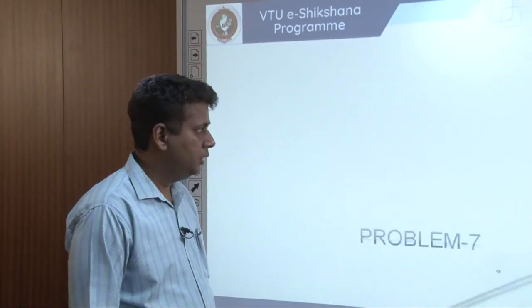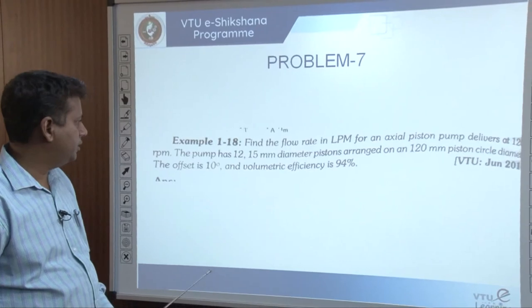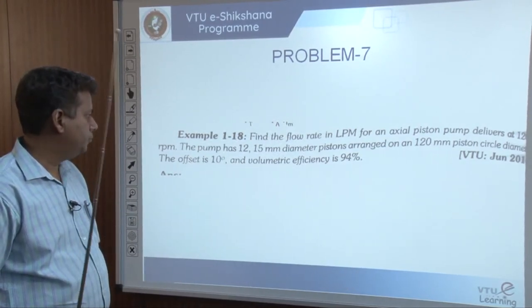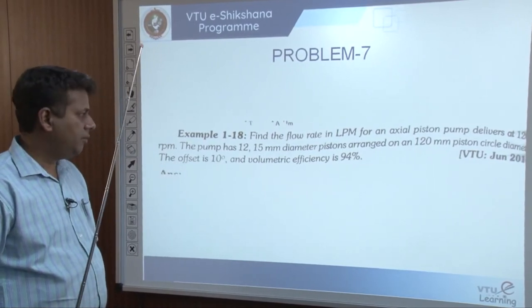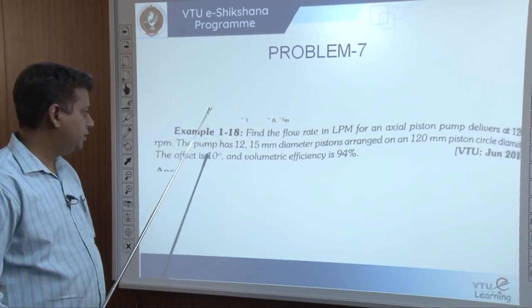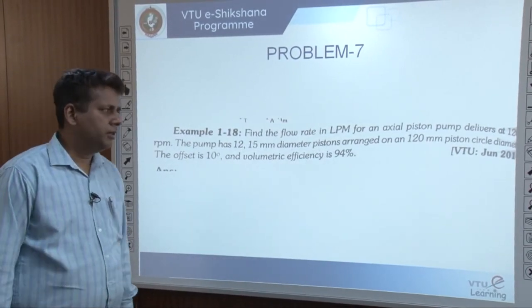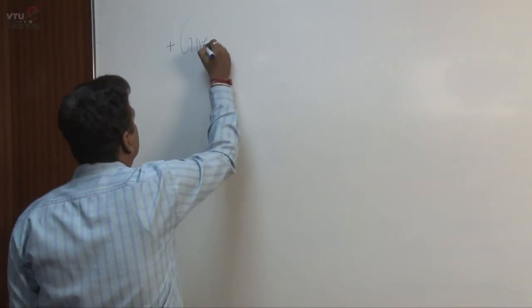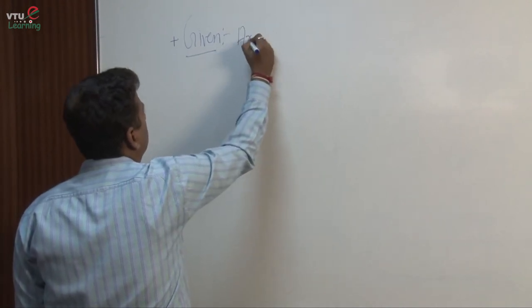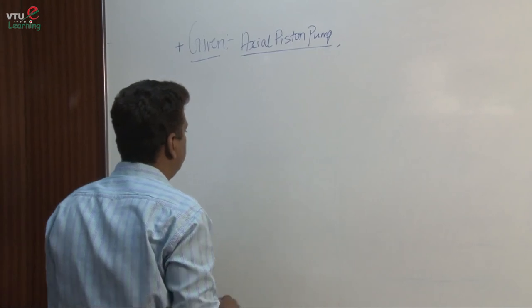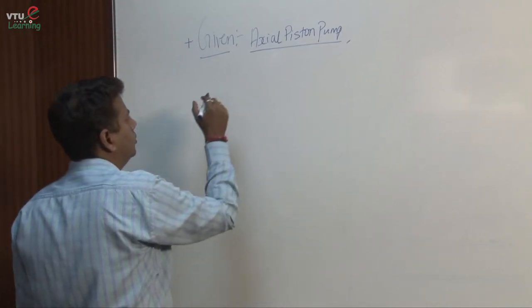We move on to the last problem in the pump series — Problem 7. Find the flow rate in LPM for an axial piston pump delivering at 1200 rpm. The pump has 12 pistons of 15 mm diameter arranged on a 120 mm piston circle diameter. The swash plate offset angle is 10 degrees and the volumetric efficiency is 94%.